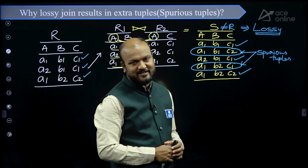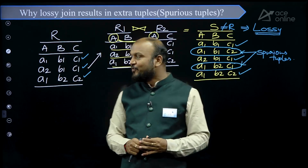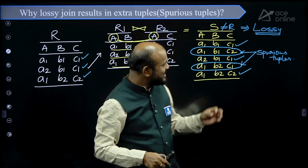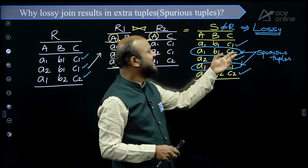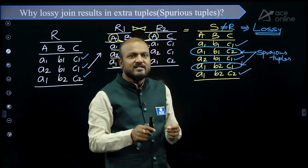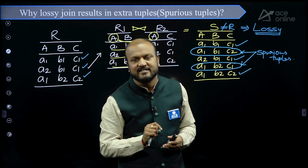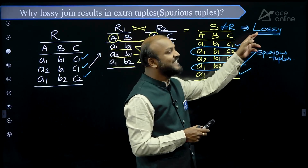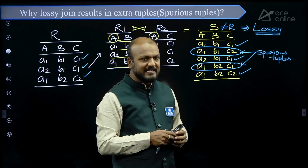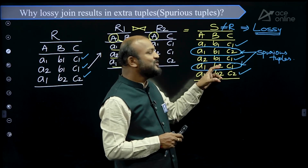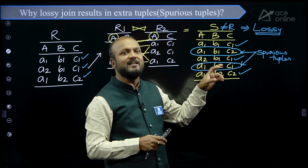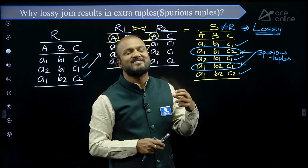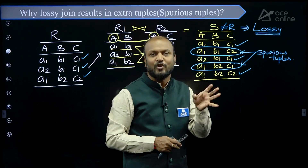Then you may ask: all the tuples that were there in R are also there in S, but we are getting extra tuples — so why are we calling it lossy? The simple reason is: if the decomposition shows extra tuples that represent wrong information, it is said to be lossy.